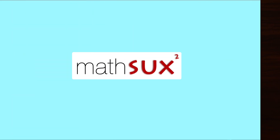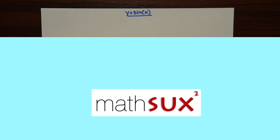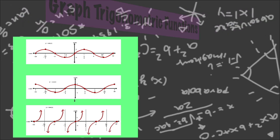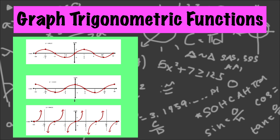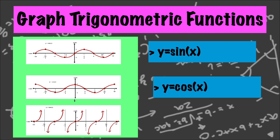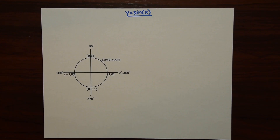Hi everyone and welcome to Math Sucks. This video is going to help you pass Algebra 2 trig. We're going to go over how to graph trigonometric functions by deriving the coordinate points and graphing y equals sine of x, y equals cosine of x, and y equals tan of x. We're going to derive the coordinate points for each graph by using the unit circle you see here.